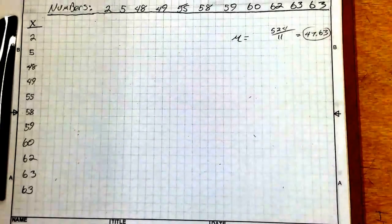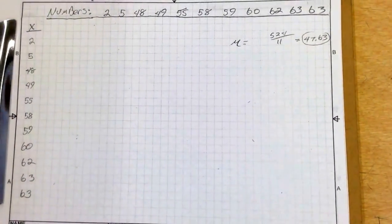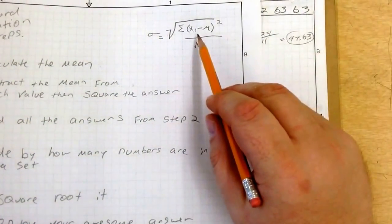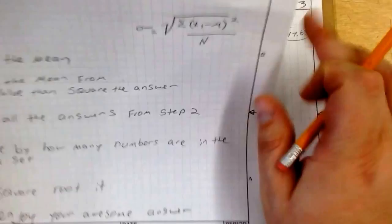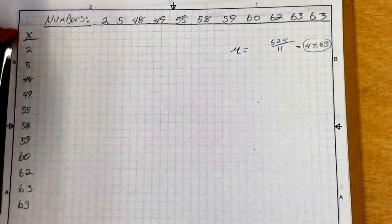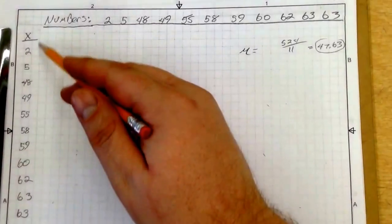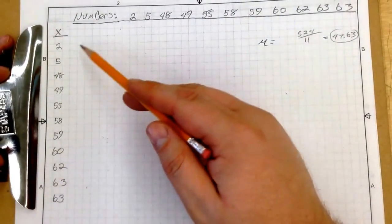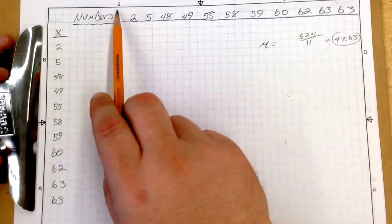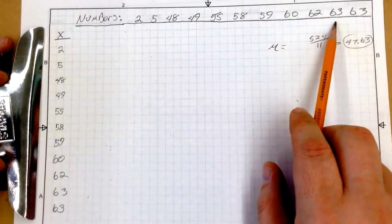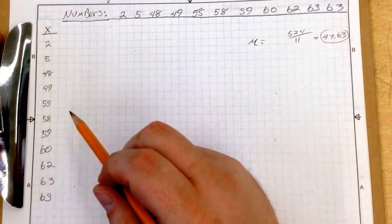So my mean is 47.63. Now if we check out the equation right here, we have to subtract the mean from each value. In order to do this, I'm going to set up my problem just like this. Here are my x values, my numbers. Same as going across the top right here. I just listed them vertically.